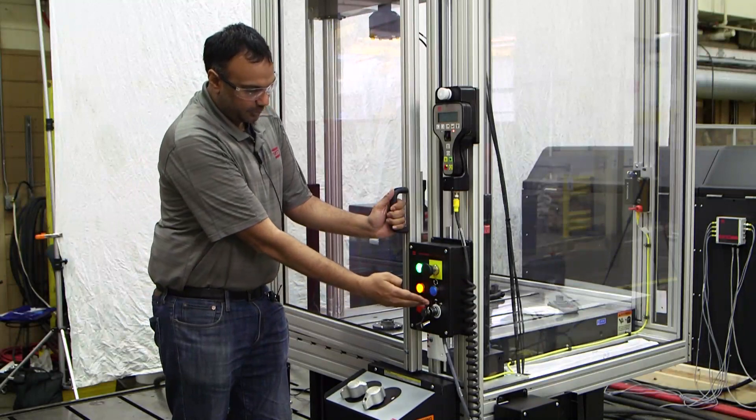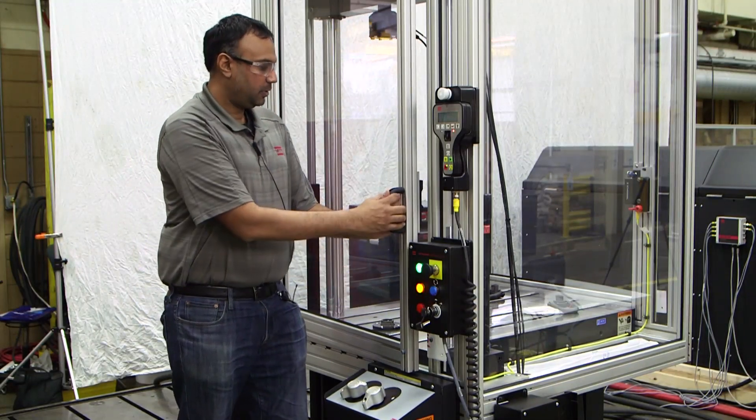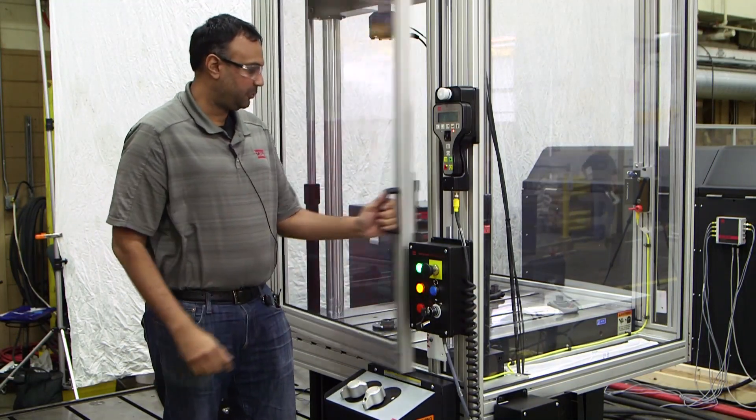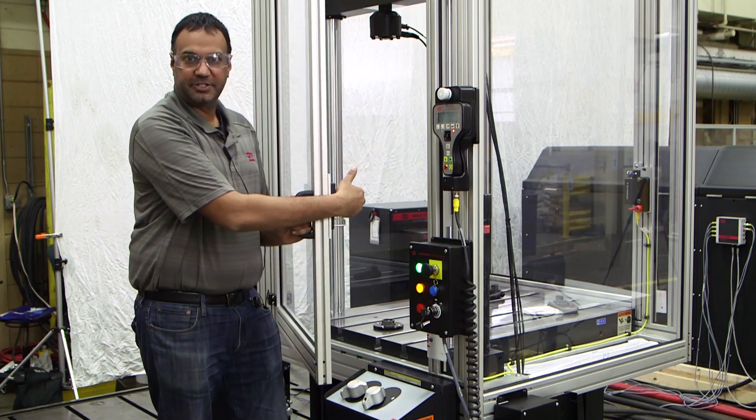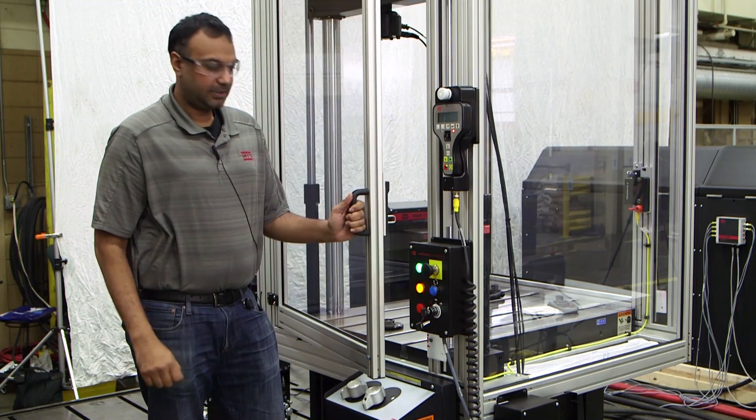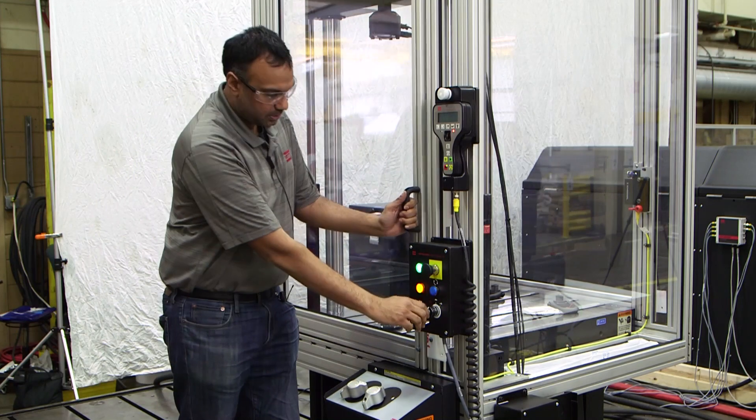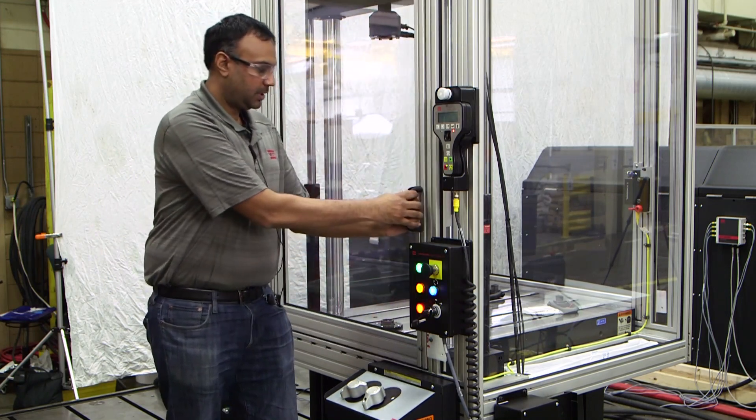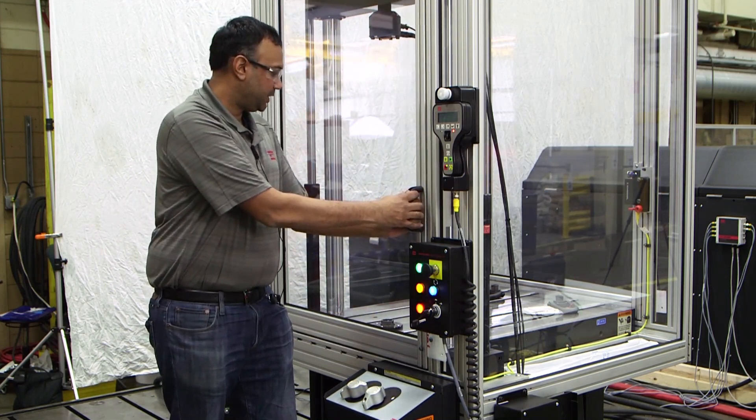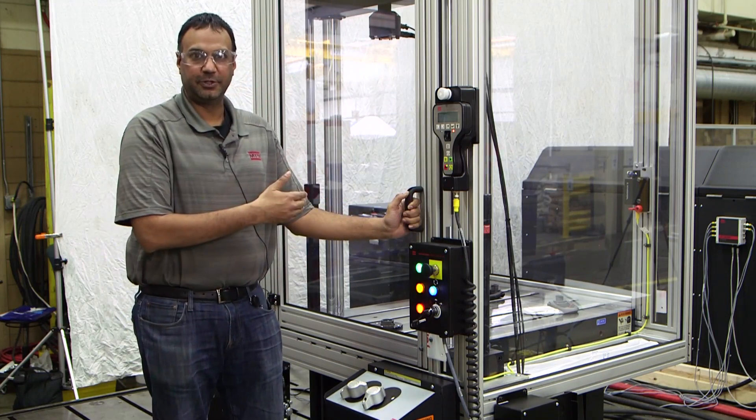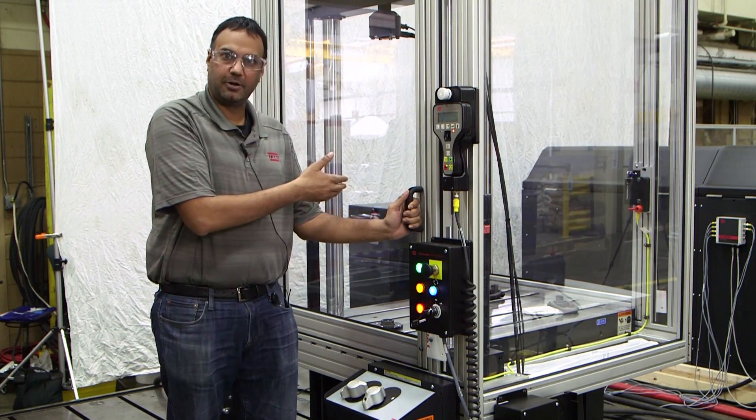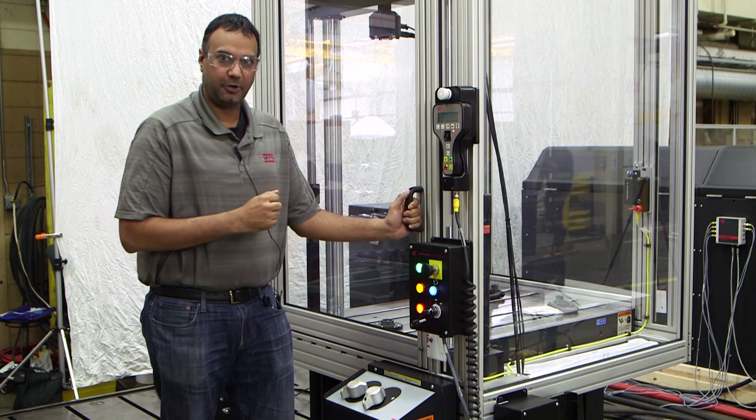For a mode switch, when we are in turtle mode, we can open and close the door as we want so we can make adjustments to the specimen or install a new specimen. Once we put it into rabbit mode, we are no longer allowed to open the door for safety reasons. We don't want anyone to get hurt when we are in high flow mode.